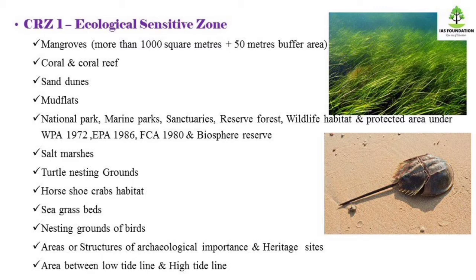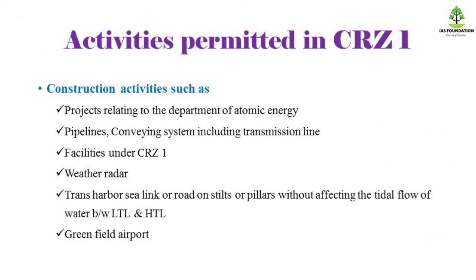If you have all these CRZ1 areas, you can see what activities are available. Construction activities are available. You can see what is available at the Atomic Energy Department. You can see Pipelines, Conveying Systems, and Transmission Lines are also permitted.